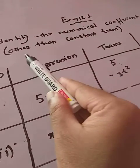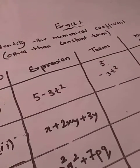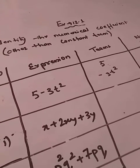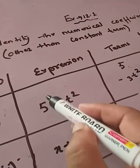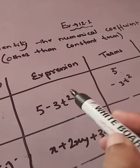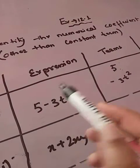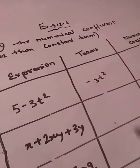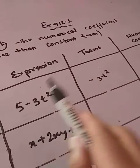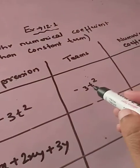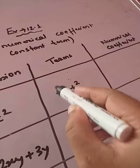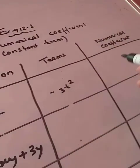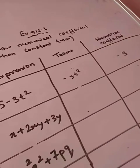Now, as because in the question it is saying other than the constant term, so we will not write the constant term. I hope you remember what is the constant term. Constant terms are those with which we do not have any variables. That is no x, y, z, nothing is there. So this is a constant term, so we will not write the constant term. Other than constant term, every term you have to write it here. Now, what is the numerical coefficient? That is, what is the number in this particular expression? That is minus 3. So this is your answer.